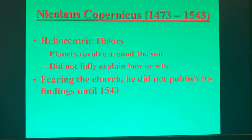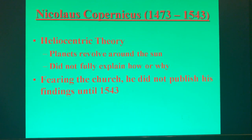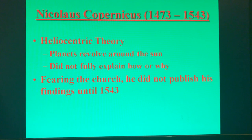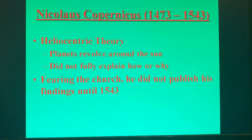Our first great thinker from the Scientific Revolution is Nicholas Copernicus. He came up with what is still known as the heliocentric theory — the idea that the planets, including the earth, revolve around the sun. He did not know how to fully explain how or why this occurred, but based on his observations, he made the conclusion that everything in what we know today as our solar system revolves around the sun, not the earth.